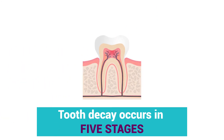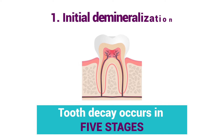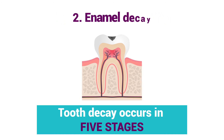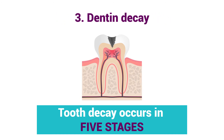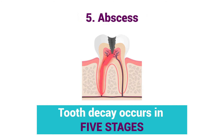Tooth decay occurs in five stages, with the deterioration worsening as the stages progress. Number one, initial demineralization. Number two, enamel decay. Number three, dentin decay. Number four, pulp damage. And number five, abscess.